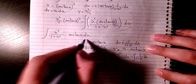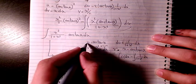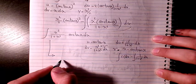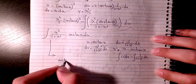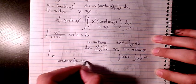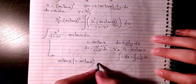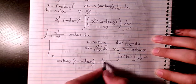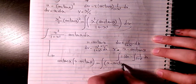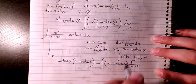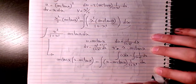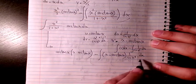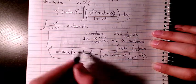So the answer to this integration by parts is u·v minus the integral of v du: arctan(x) · (x − arctan(x)) minus the integral of (x − arctan(x)) · 1/(1 + x²) dx.